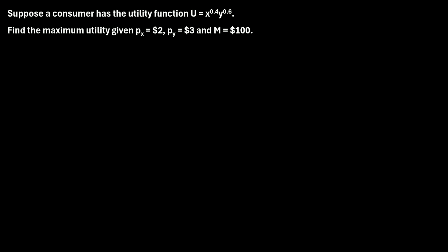In this video, I will explain how to maximize utility using the Lagrange method. So let's jump right into an example. Suppose a consumer has the utility function u = x^0.4 times y^0.6. Find the maximum utility given the price of good x is $2, the price of good y is $3, and the income m is $100.